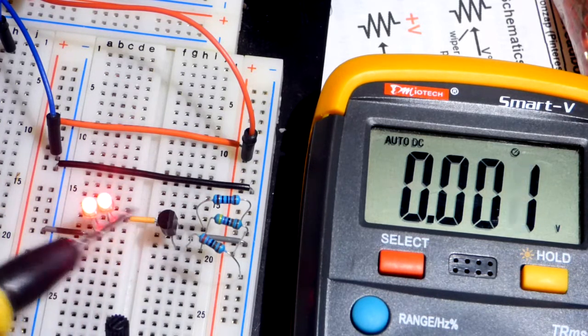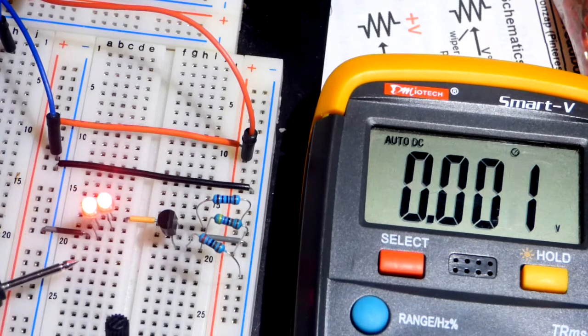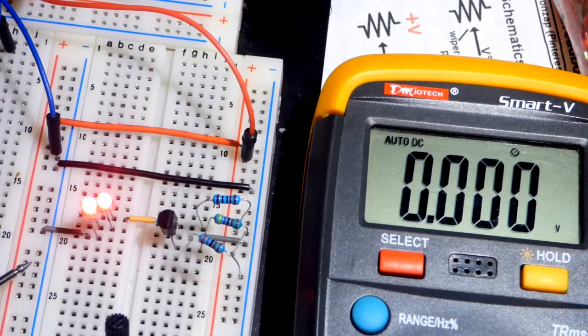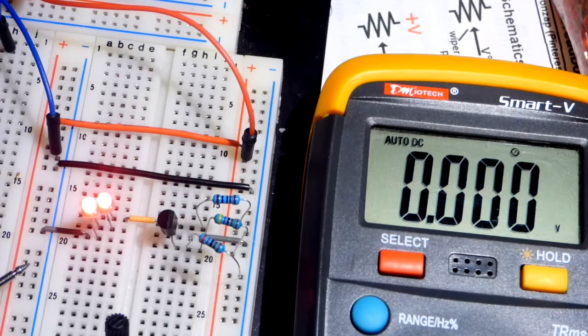This is the LM431. And what this component is, is an adjustable precision zener shunt regulator. So it basically acts kind of like a zener diode.